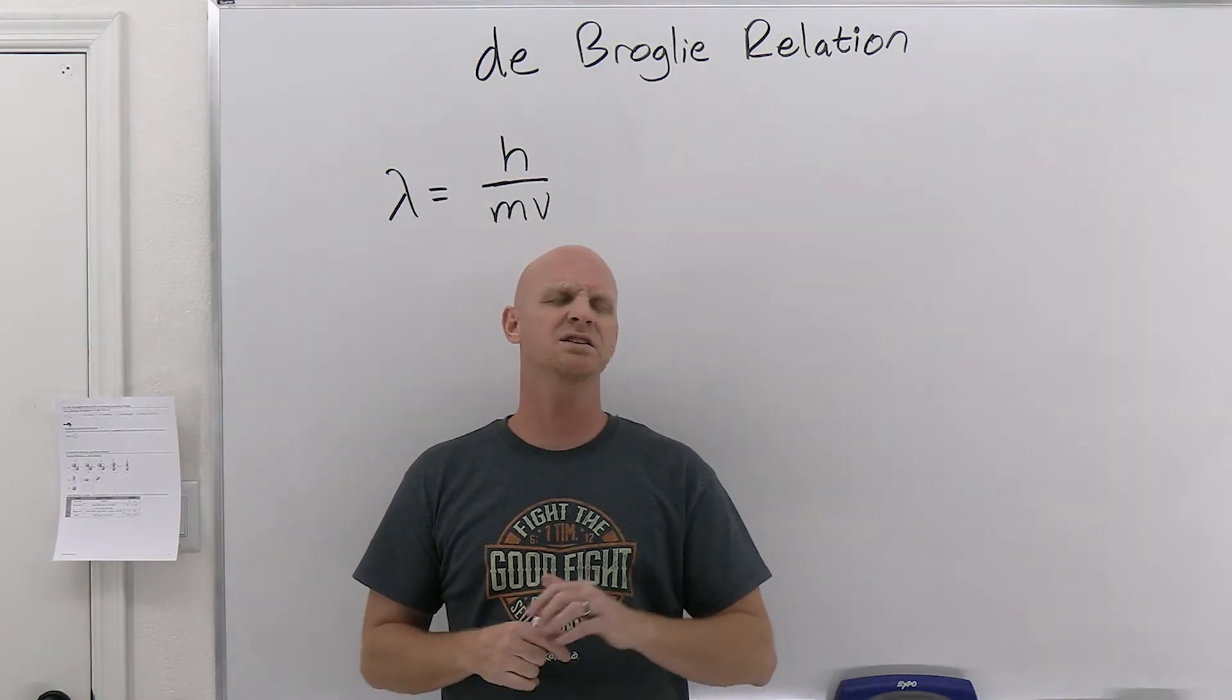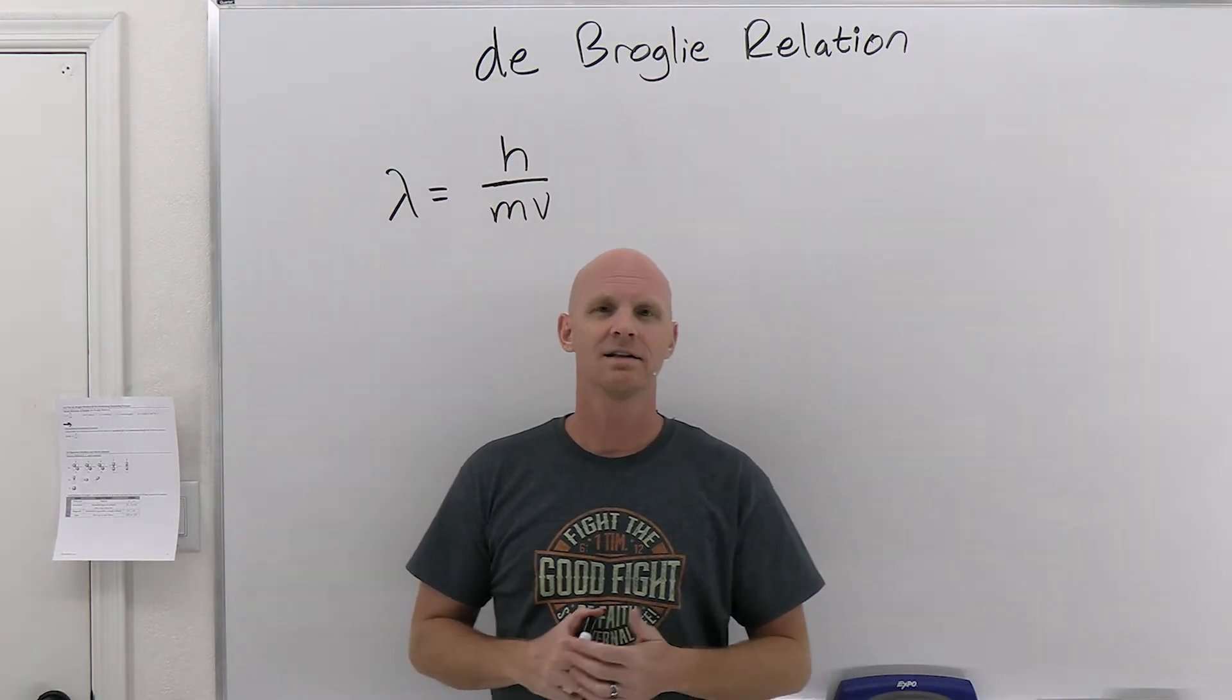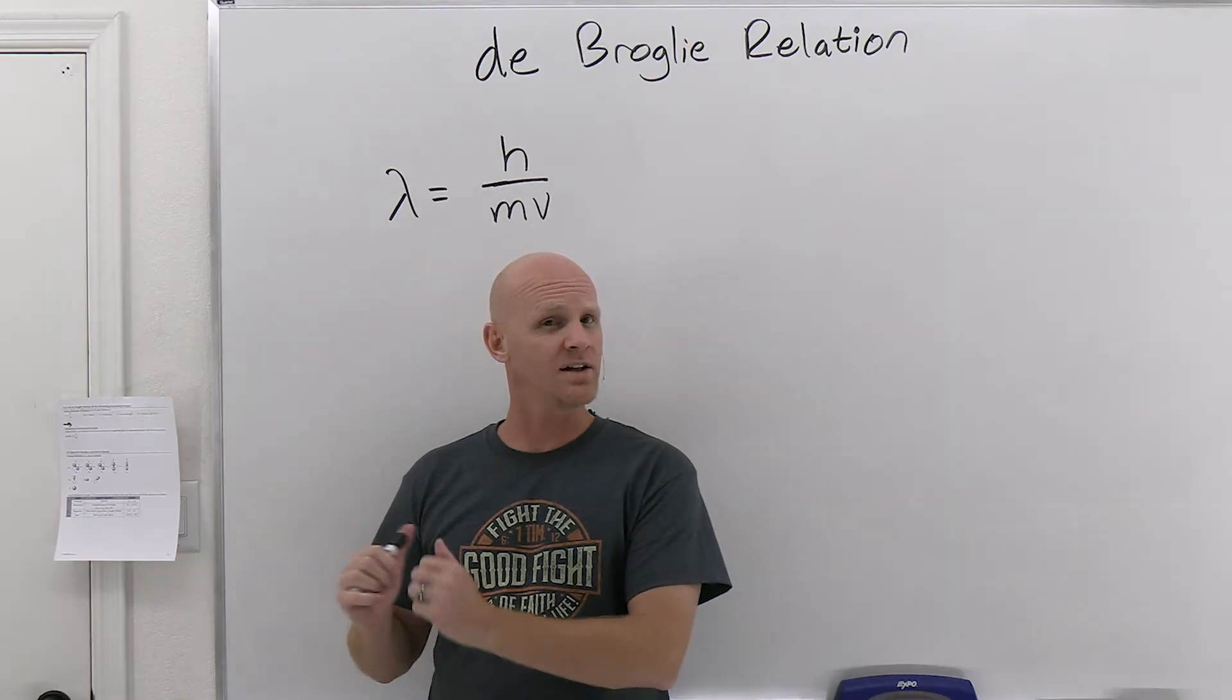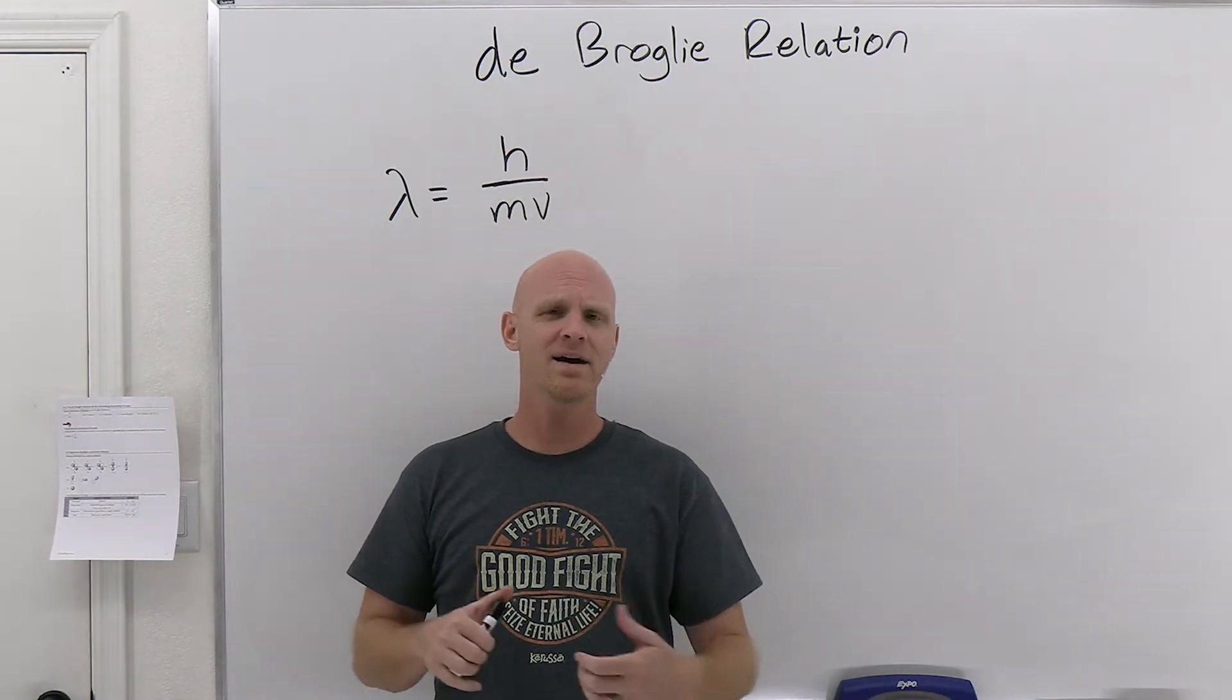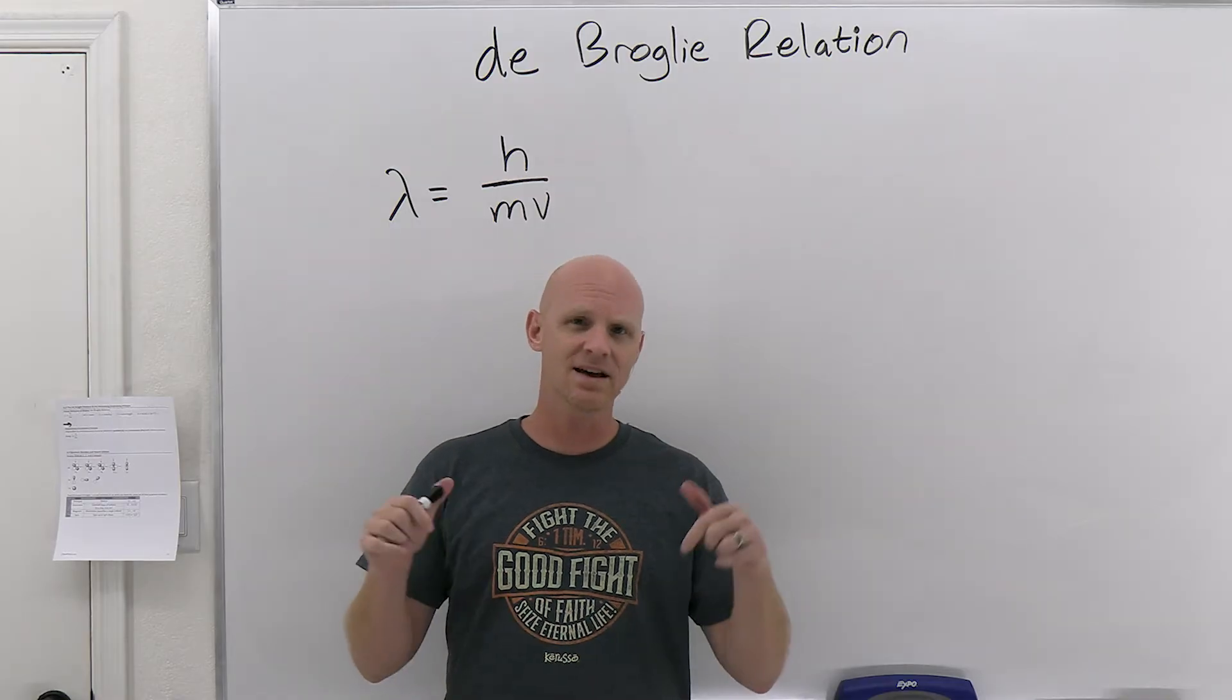And so what they did is they just said, we'll get back to you, Mr. de Broglie. We'll get back to you. And so they sent his thesis off to Mr. Einstein and said, hey, what do you make of this? And Einstein says, give the man his PhD, quit horsing around, and then send him to me.